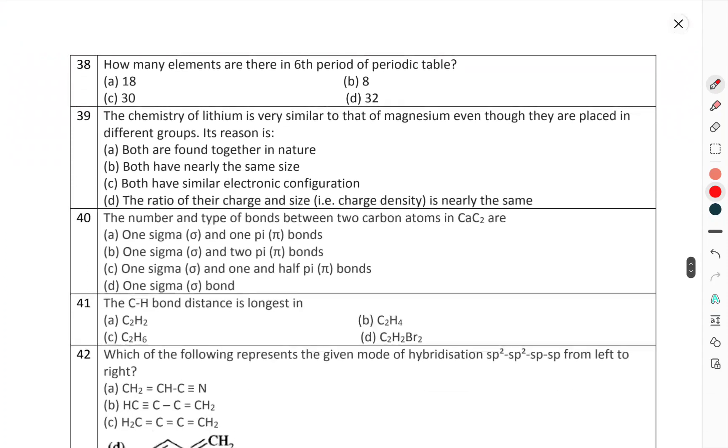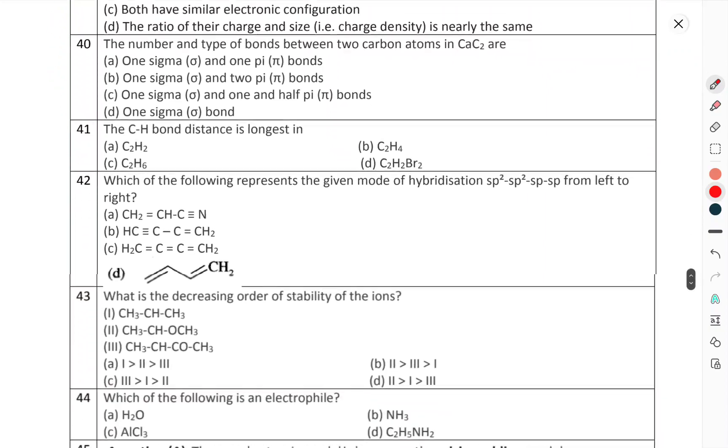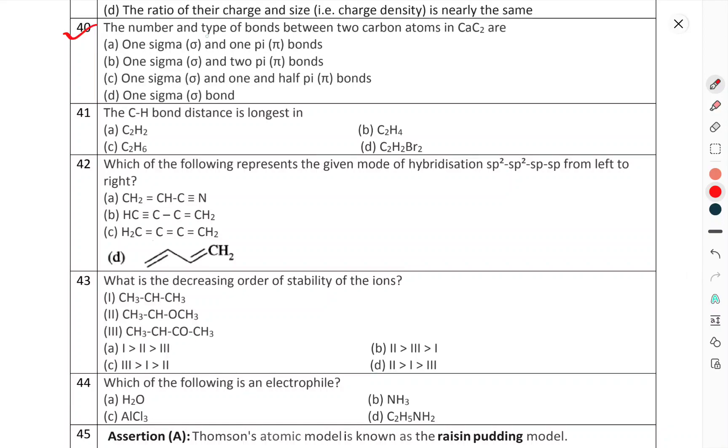Question number 38: How many elements are there in the 6th period of the periodic table? Question number 39: The chemistry of lithium is very similar to that of magnesium even though they are placed in different groups. The reason is. Question number 40: The number and types of bonds between two carbon atoms in CaC2 are.